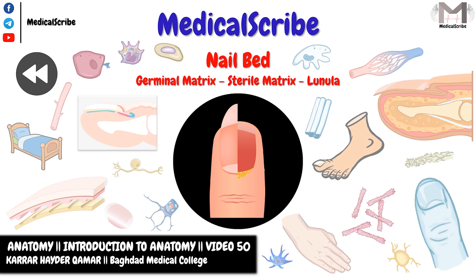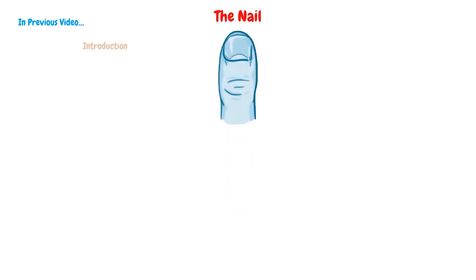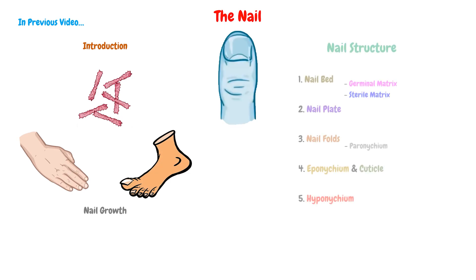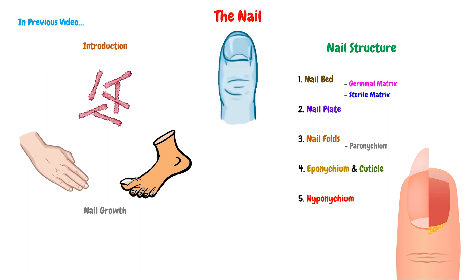Hello everyone in Medical Scribe. I'm Karar Haider, a student at Baghdad Medical College. In the previous video, we began with the fourth element of the skin appendages, which is the nail. We took an introduction about it and explained nail growth. Then we mentioned the main parts of the nail structure, and we said that in the upcoming videos we will talk about each structure with all its details.